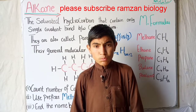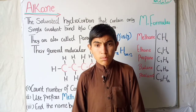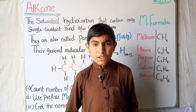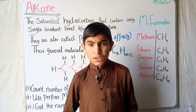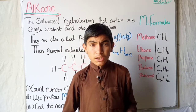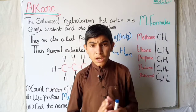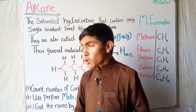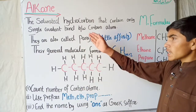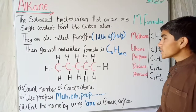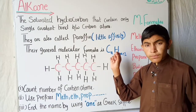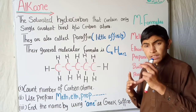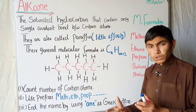Assalam alaikum dear students. Today we will talk about the next topic of hydrocarbons in the organic stream, which is the alkane. Alkane is a saturated hydrocarbon that contains only single carbon bonds. Other hydrocarbons contain double carbon bonds or triple carbon bonds, which we will talk about later. Today's topic is alkane.